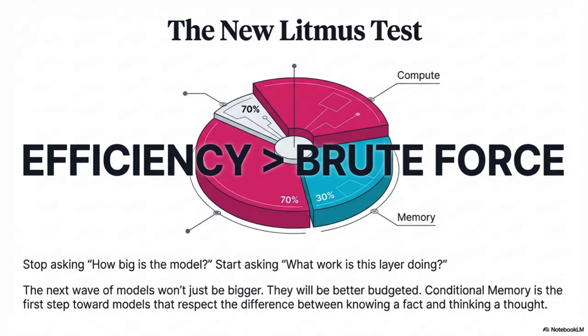Here's a final thought: if you really want to understand how this is working, the fastest way is to watch it fail. Find a way to see what the transformer backbone does when you intentionally take that memory crutch away. Observing that functional split between the logic engine and the recall engine — especially under stress — is how you'll really grasp the power of this new focused architecture.